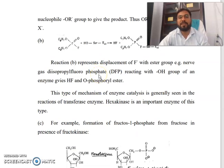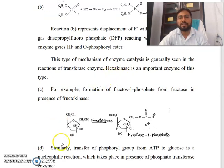For example, formation of fructose-1-phosphate from fructose in the presence of fructokinase. Look at this sugar molecule, fructokinase, and then the attachment of phosphate. This is the fructose-1-phosphate.